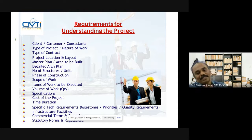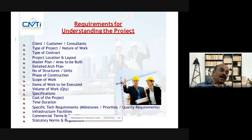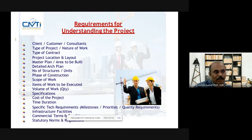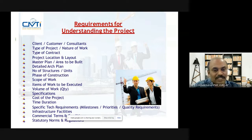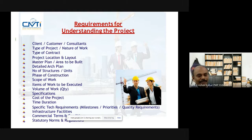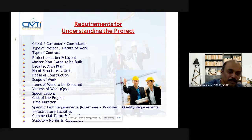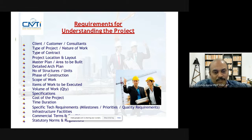Next is specifications — you should know about the specification of the work. For an international project like an airport, a lot of materials must come from international locations — aero bridges, for example, come from Germany or other countries. You should know the specification: from which country the materials are coming, whether you are using a brick, solid block, or lightweight block — that is the material specification decided by the architects. You have to read the architectural drawings and understand the specification: what material we are using, where it is coming from, and how it has to be tested before it goes for construction.